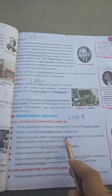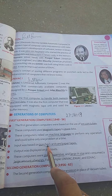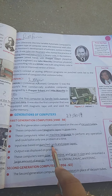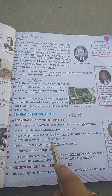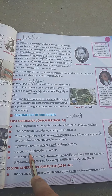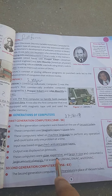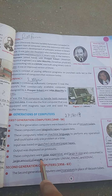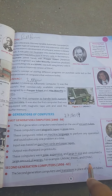Machine language is also known as binary language, the language of bits. Input was done with the help of punch cards and paper tape. Punch cards are stiff paper used for inputting data in the form of zeros and ones. Output was displayed through printouts. These computers were slow, expensive, large in size, and consumed a lot of energy. Examples were UNIVAC, ENIAC, and EDVAC.